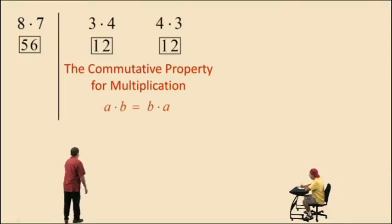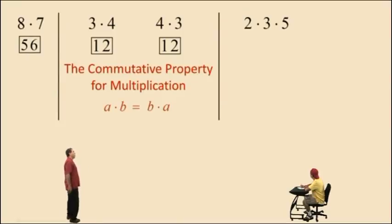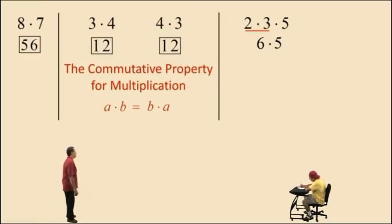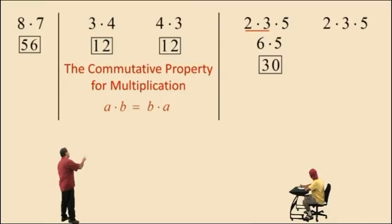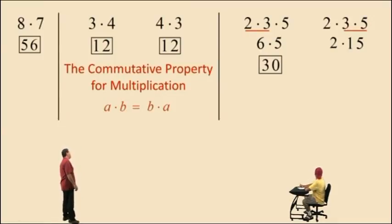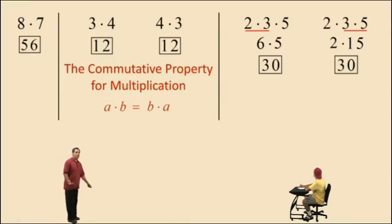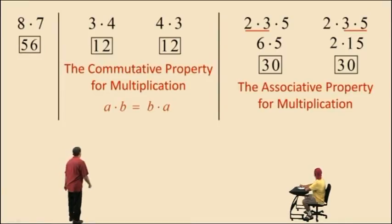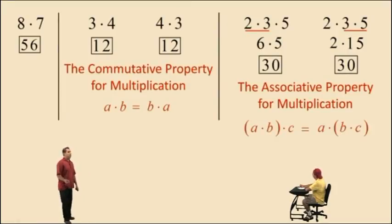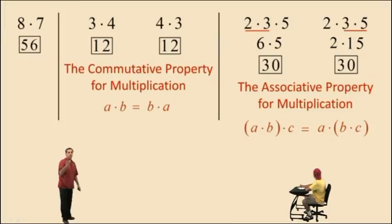Now suppose we have three numbers being multiplied. If we multiply the first two numbers first, that gives us 6, and then 6 times 5 is 30 — that's our answer. But suppose we multiply the last two numbers first: 3 times 5 is 15, then multiply by 2, and you get 30. Notice it's the same answer. This demonstrates the associative property of multiplication, which states you can multiply the first two first, or the last two first, and get the same result.